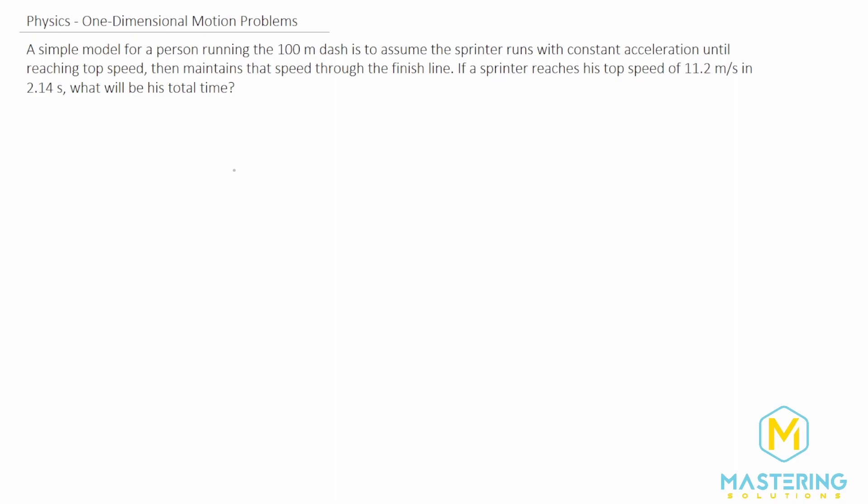The sprinter reaches his top speed of 11.2 meters per second in 2.14 seconds. What will be his total time? We need to figure out the acceleration first. Let's do that right now.